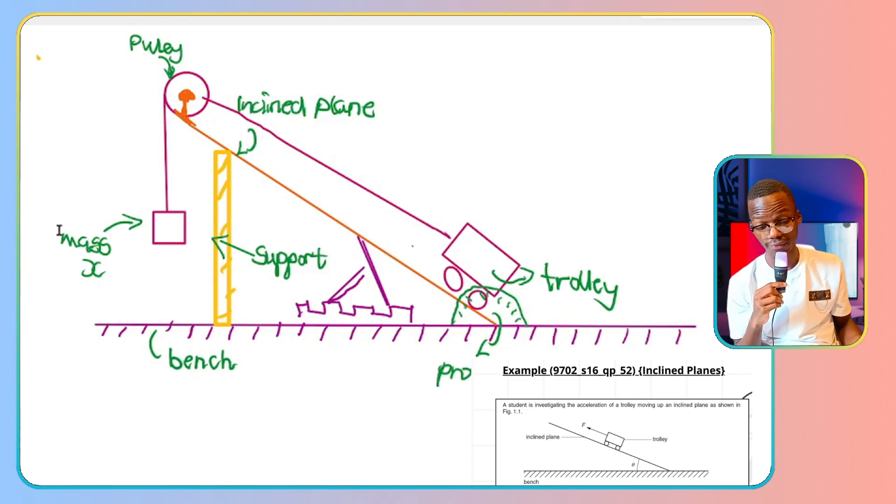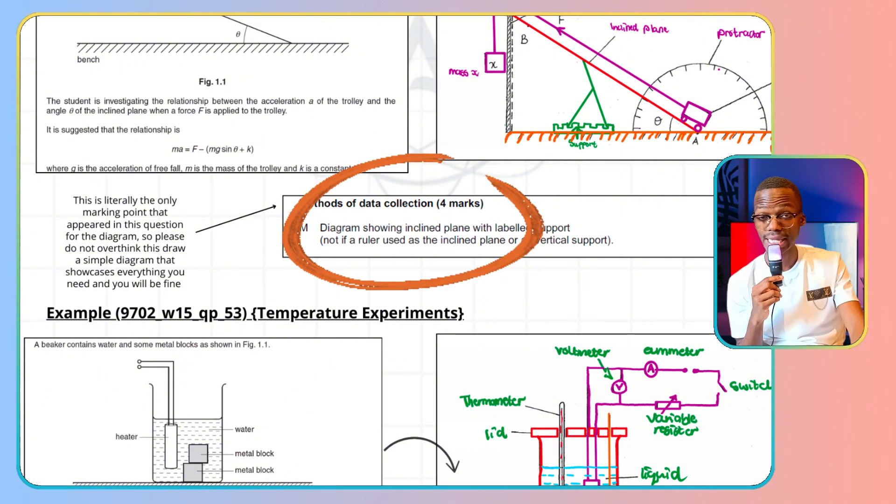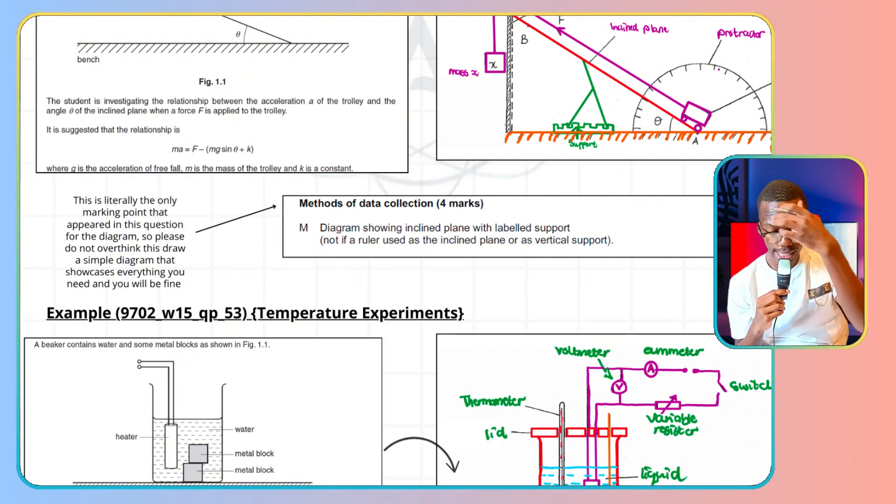That's the diagram that I need. If you look at the marking scheme, they just want a diagram showing inclined plane with labeled support, and you should have some vertical support to do that. And that's all they need. This is literally the only marking point that appeared in this question for the diagram. So please, do not overthink this. Draw a simple diagram that showcases everything that you're going to need. Let's do another example. So you see that you don't really have to overthink this.